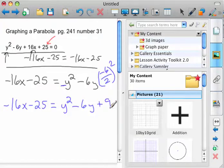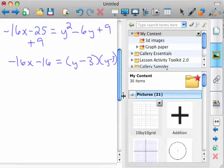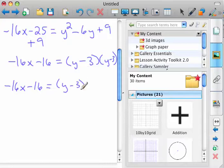Whatever you add to the right, you have to also add to the left. So now we've got negative 16x minus 16 equals, and then if you factor this, it's y minus 3 squared, which was the goal to start with. So negative 16x minus 16 equals y minus 3 squared.